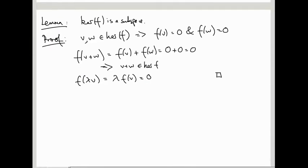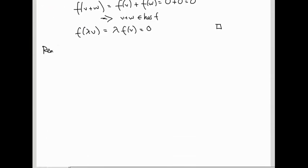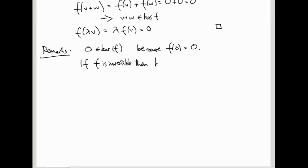I want to make some remarks about kernels. First of all, 0 is always in the kernel for any linear map F, because F of 0 equals 0, as we saw last video when we were talking about linear maps. So the kernel is always nonempty. If F is invertible, in other words, if F corresponds to an invertible matrix, then ker F equals just {0}, right? There's nothing else in the kernel. This is because if F of V equals 0, then V equals F inverse of 0, which is 0. So the only thing in the kernel is then 0.